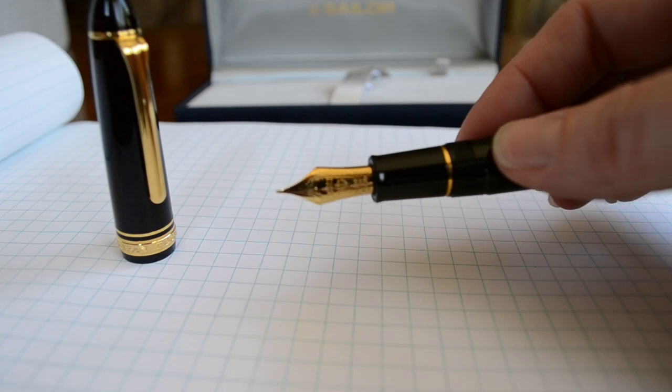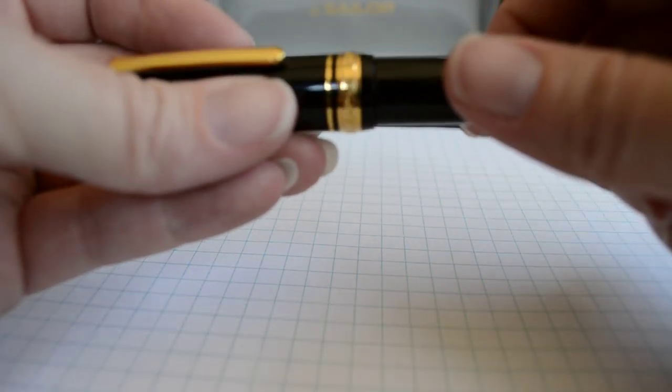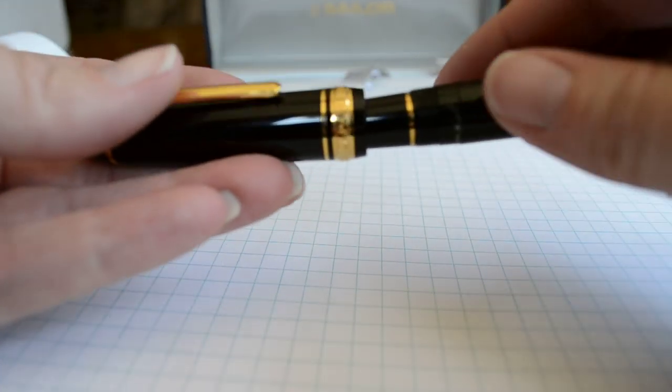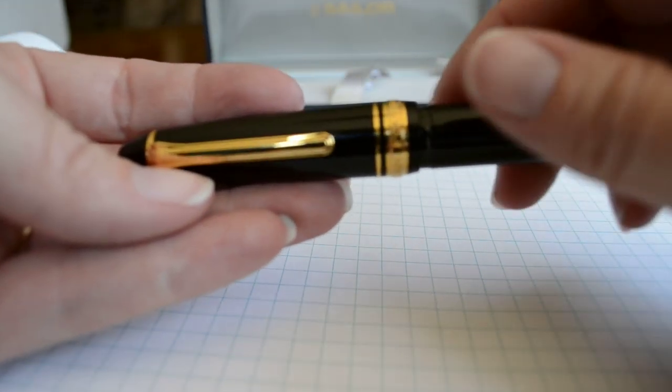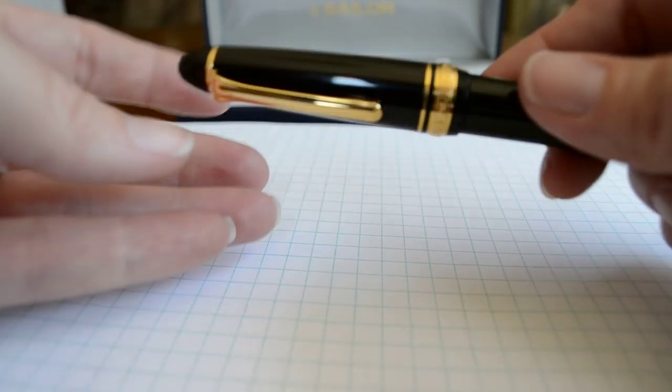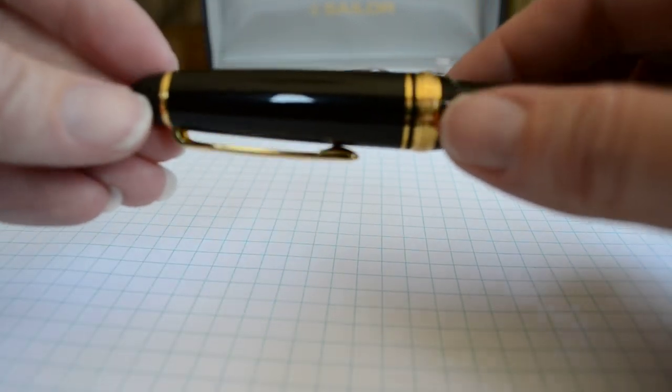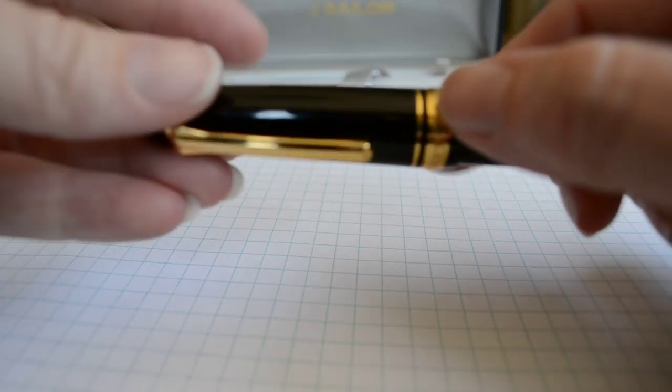It says 1911, which was the year that the Sailor company was founded. It takes about three turns to get the pen open and closed, a little against my preferences—I prefer a pull-off cap. It's a tension fit pen clip so you can have it attached securely to your pocket.